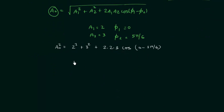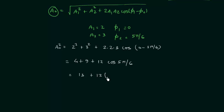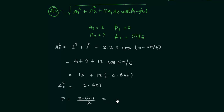2² is 4, 3² is 9, and 2×2×3 is 12. cos(0 − 5π/6) is cos(−5π/6), and since cos(−θ) = cos(θ), we have cos(5π/6). That gives us 13 + 12·cos(5π/6). cos(5π/6) is equal to −0.866. When you solve this you get 2.607 as the value of a0², therefore average power P = 2.607 / 2 = 1.303 watts.